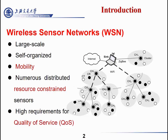Nowadays, wireless sensor networks are applied widely in industry, agriculture, smart grid, and so on for their data sensing and analysis. It is a large-scale network, including linear self-organized subnetworks. The sensors in it are dynamic and resource-constrained. With numerous data streams and numerous sensors, it causes high demand for quality of service.